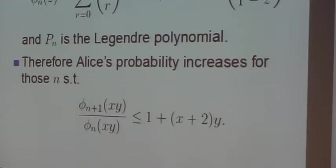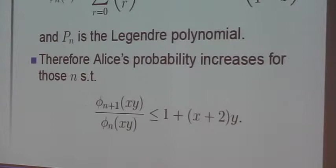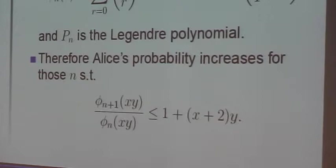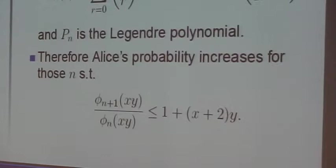So that's what phi_n(z) is. If you look at the expression on the right-hand side there, you see that what's happening is the following: that Alice's probability will increase for just those values of n for which phi_{n+1}(xy)/phi_n(xy) is less than or equal to (1+x)(1+y)/2.